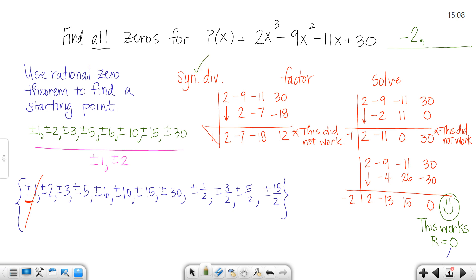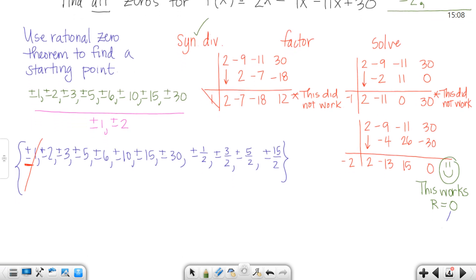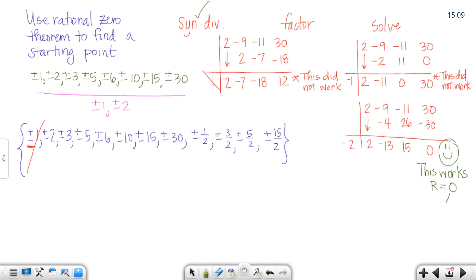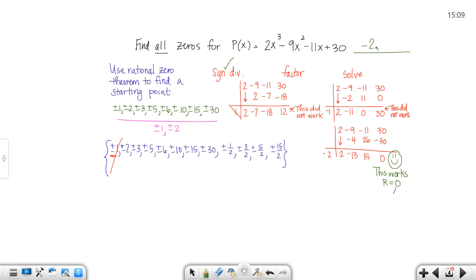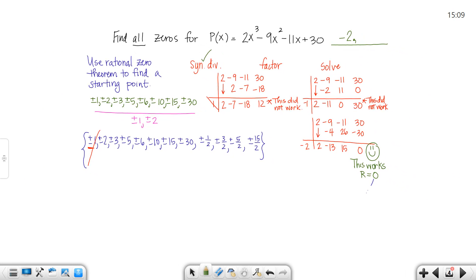That's the synthetic division step. Great! We found one that works. After we do synthetic division, my next step says factor. Remember this problem started with x cubed, so this synthetic division answer is going to begin with x squared. This would be 2x² - 13x + 15. So this step would be to factor.